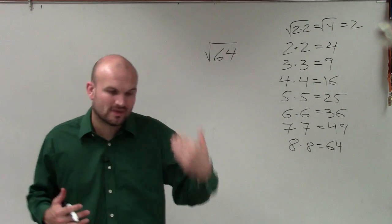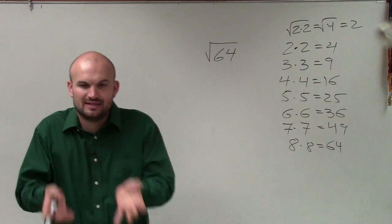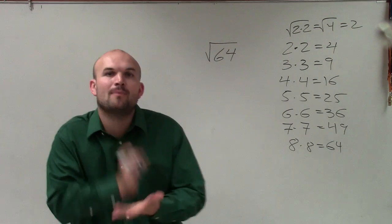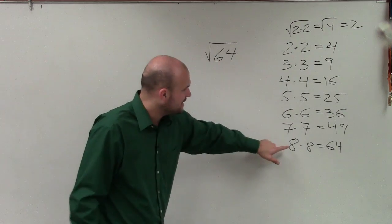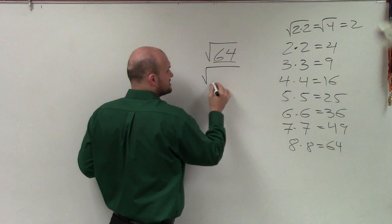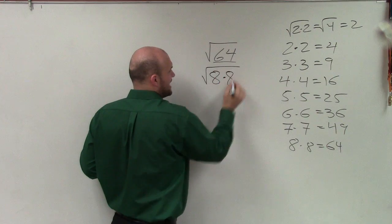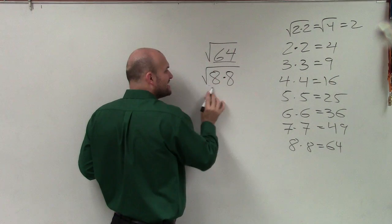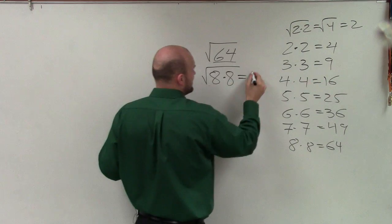let's think back: what does the square root mean? The square root represents what number multiplied by itself gives us 64. Since 64 equals 8 times 8, what number multiplied by itself gives us 64? These are the same thing. Therefore,